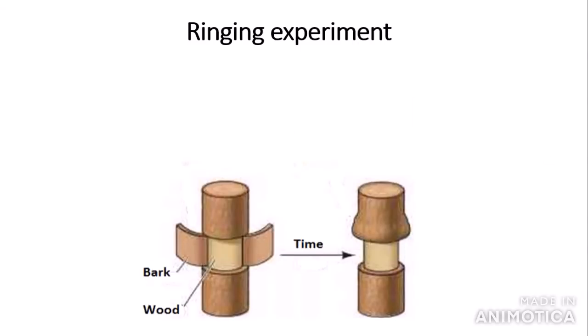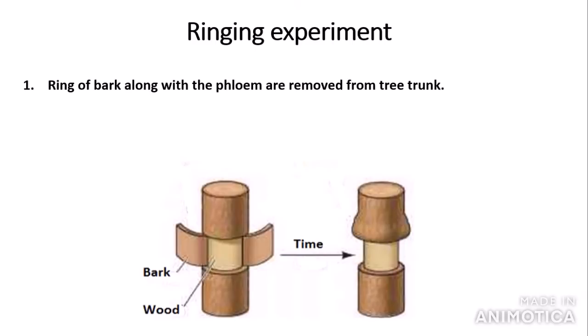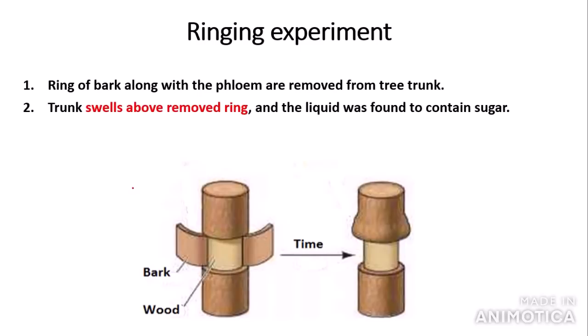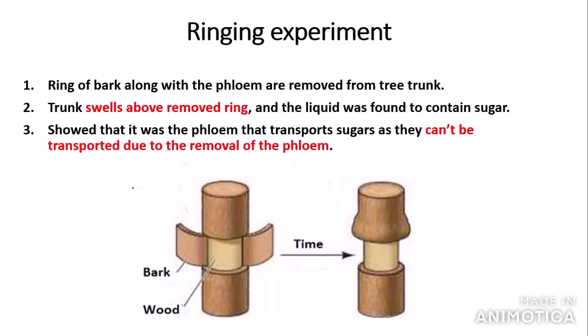You need to know about two different experiments that prove the phloem is the vessel that carries organic substances. The first is called the ringing experiment. A ring of bark along with the phloem is removed from a tree trunk. The results show that the trunk swells above the removed ring, and liquid extracted from this swelling was found to contain sugars. This showed it was the phloem that transports sugars, because the sugars cannot be transported when the ring — including the phloem — is removed.